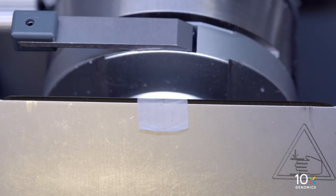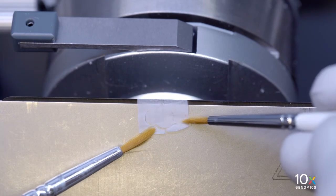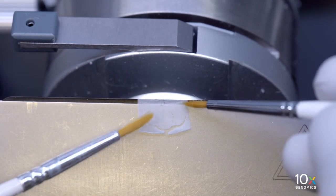Once the desired tissue section is obtained, carefully flatten it out by gently touching the surrounding OCT with cryostat brushes.